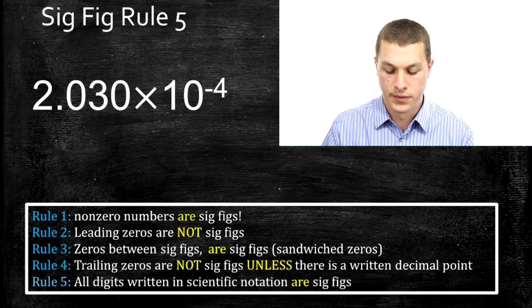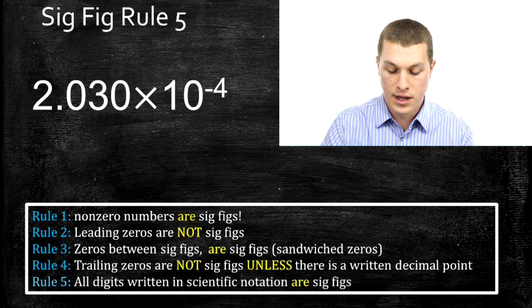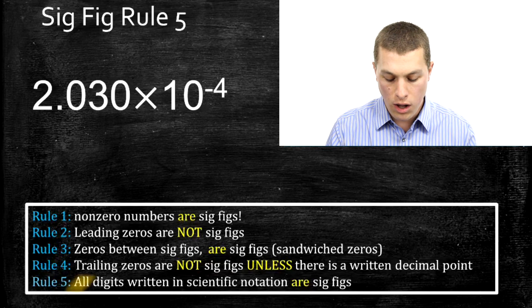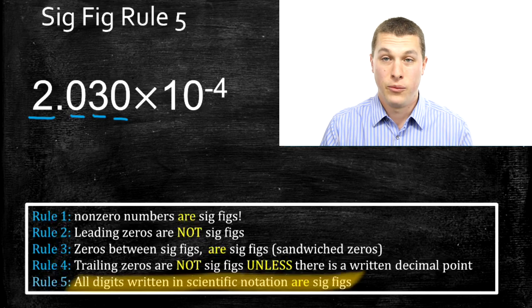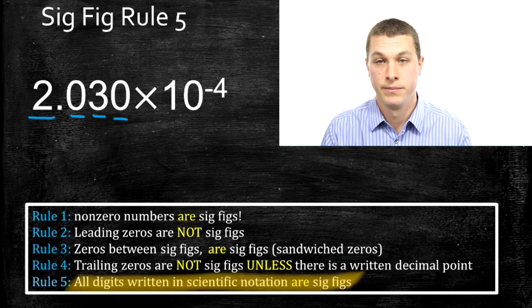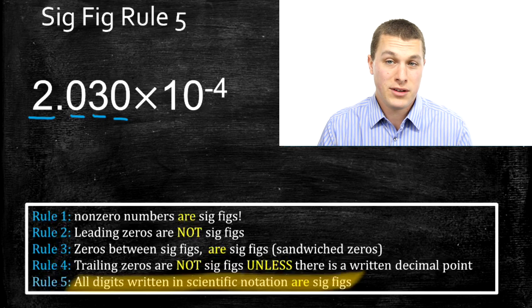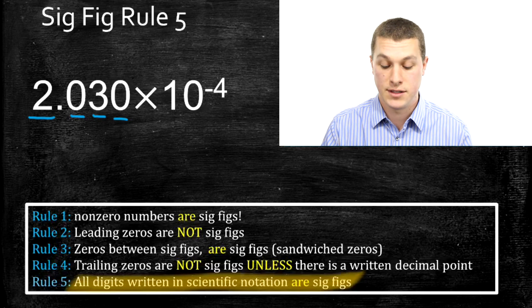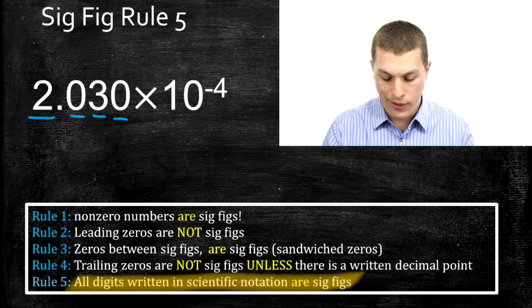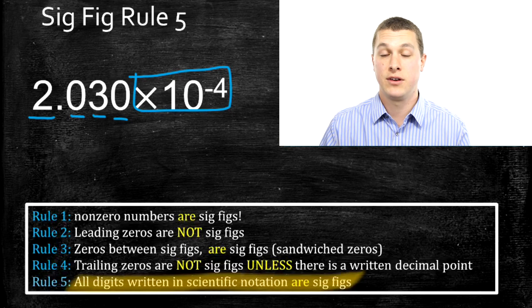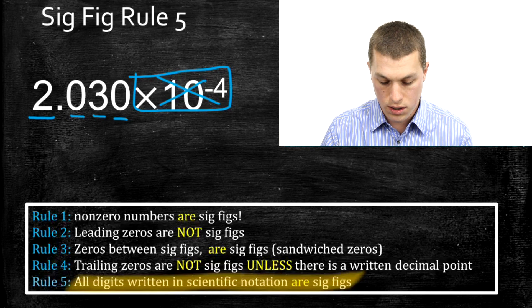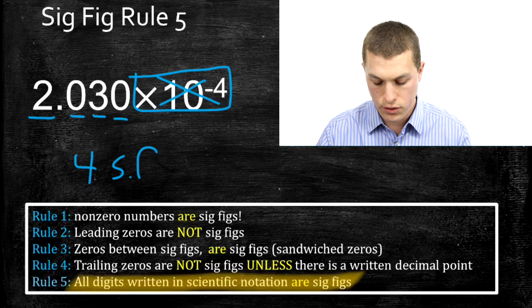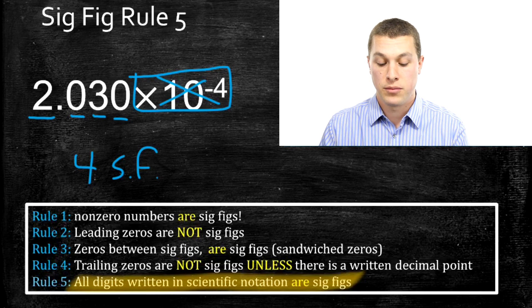Now we have a number in scientific notation. This is the only case where we don't even need to identify zeros, because all digits written in scientific notation are sig figs by rule five. So all we have to do is count the digits. There are sandwiched and trailing zeros present, but we don't even need to think about those — if they're written in scientific notation, they are sig figs. What we don't count is the ten or the minus four, since those only move the decimal around. So how many total sig figs? Four. That's by rule five — probably the easiest rule to apply.